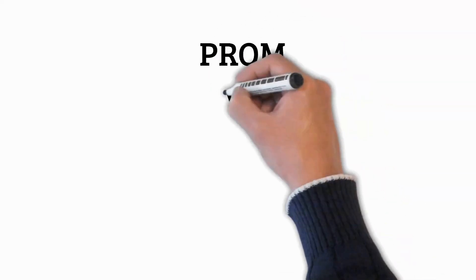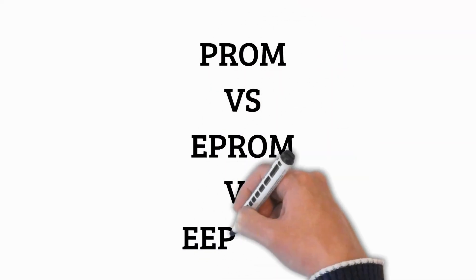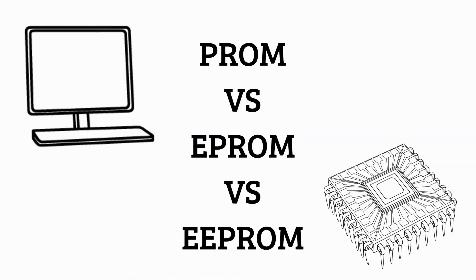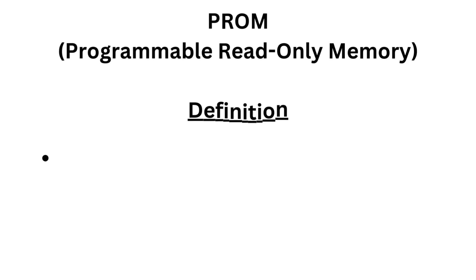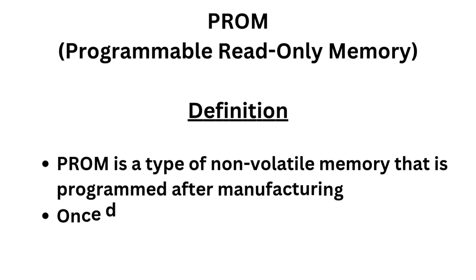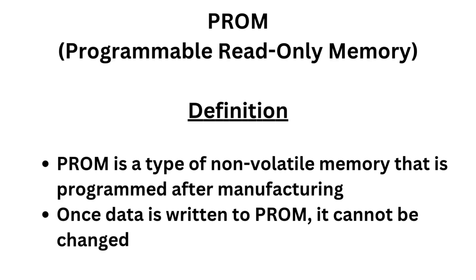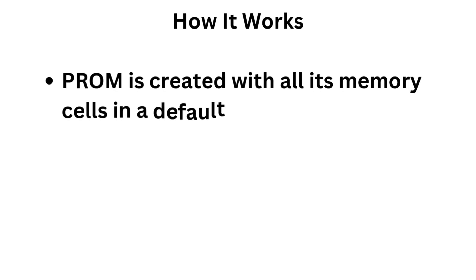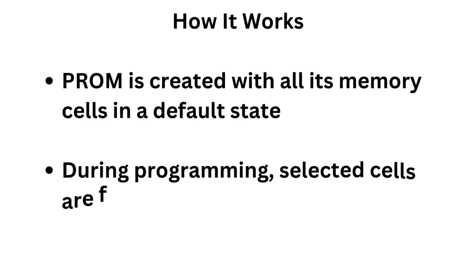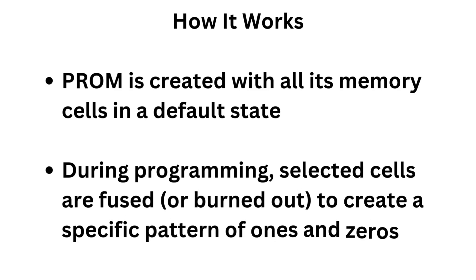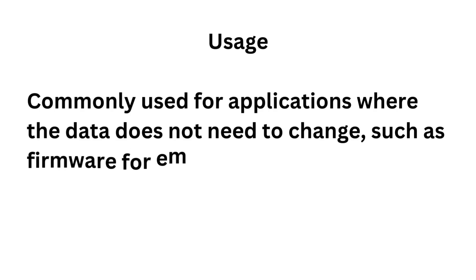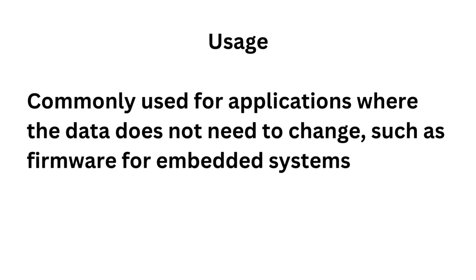Let's look into PROM, EPROM, and EEPROM. PROM, or Programmable Read-Only Memory: PROM is a type of non-volatile memory that is programmed after manufacturing. Once data is written to PROM, it cannot be changed. PROM is created with all its memory cells in a default state; during programming, selected cells are fused or burned out to create a specific pattern of ones and zeros. It is commonly used for applications where the data does not need to change, such as firmware for embedded systems.